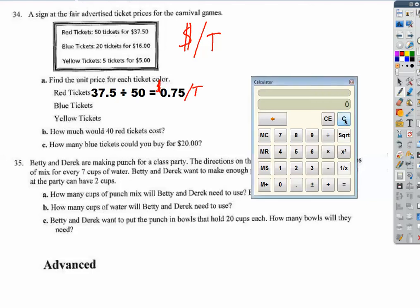For blue, it's $16 divided by 20 tickets. I'm going to get 80 cents per ticket. And then finally, for yellow tickets, $5 for five tickets, that's $1 per ticket.